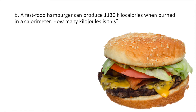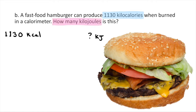A fast-food hamburger can produce 1,130 kilocalories when burned in a calorimeter. How many kilojoules is this? They're giving you 1,130 kilocalories — that's the number with its units. They're asking for kilojoules. So we need a conversion factor that relates those two units. In every one kilocalorie there are 4.184 kilojoules.